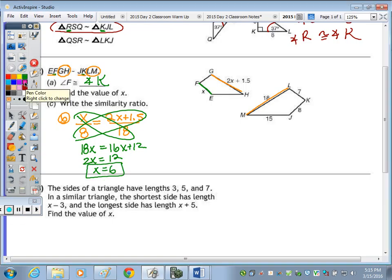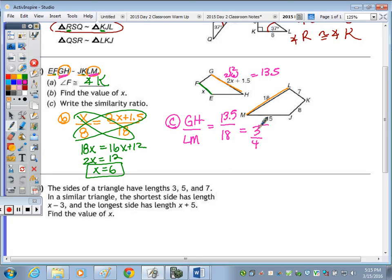In part C, we have to write the similarity ratio. So I need to look at the ratio between any two corresponding sides. And since I have them circled, I'll look at the relationship of the ratio between GH to LM. The length of GH, when I substitute, 2 times 6 plus 1.5 is 13 and a half, as 2 times 6 is 12. So we have 13.5 over 18. In reducing that fraction, we get 3 fourths.